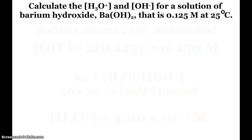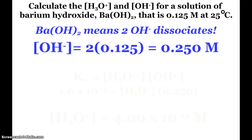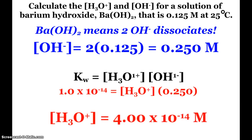So here's a question you can answer. Calculate the hydronium and hydroxide concentrations for a solution of barium hydroxide that is 0.125 molar at 25 degrees Celsius. Again, temperature dependent. Well, Ba(OH)2 means that there are two hydroxides dissociating. So if the solution is 0.125 molar, you have twice as many hydroxides. So your hydroxide concentration is 0.250 molar. Now, I can use my Kw expression and plug and chug. So I plug in the hydroxide, plug in Kw, solve for hydronium, and it's 4 times 10 to the negative 14th. Still present, but in a very small amount.